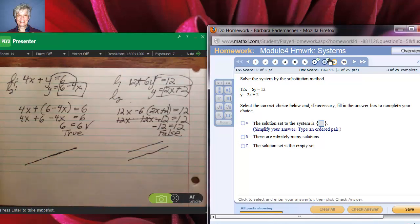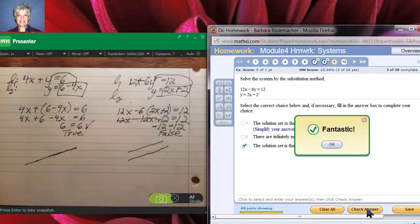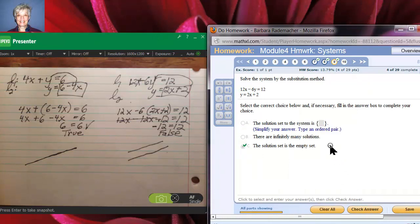That is indicative of an inconsistent system that has no solution. So this time, when you have no solution, then the set of all the solutions is empty, because there aren't any solutions there. So we're going to click on C for the solution set is the empty set. Oh, I got it right.